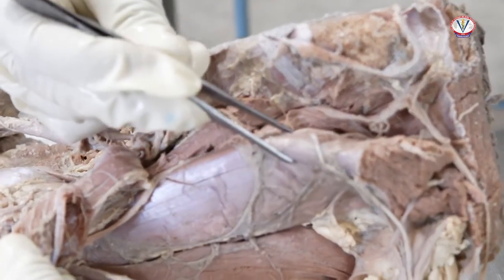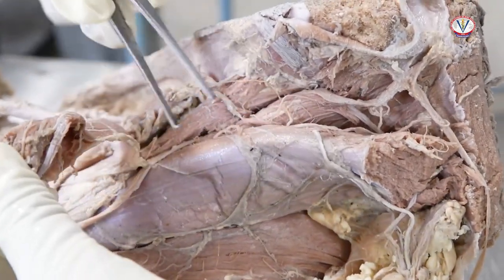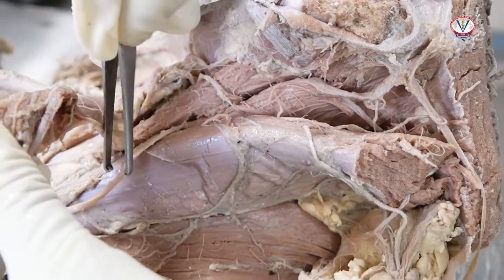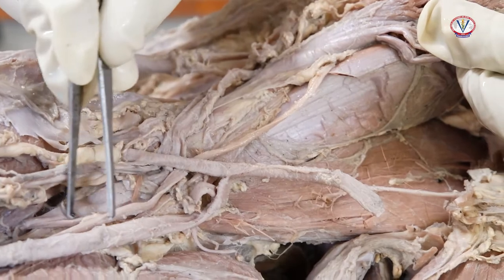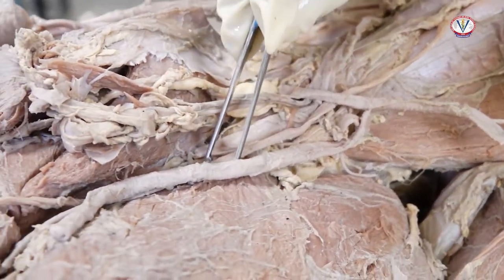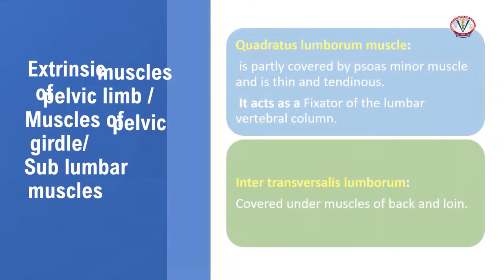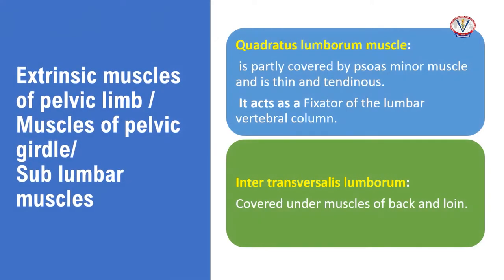Iliopsoas can be divided into lumbar or iliac parts. It is a flexor of the hip joint, rotates the thigh outward, and draws the hind limb forwards. Quadratus lumborum muscle is partly covered by psoas minor muscle and is thin and tendinous; it acts as a fixator of the lumbar vertebral column. Intertransversalis lumborum is covered under muscles of the back and loin.